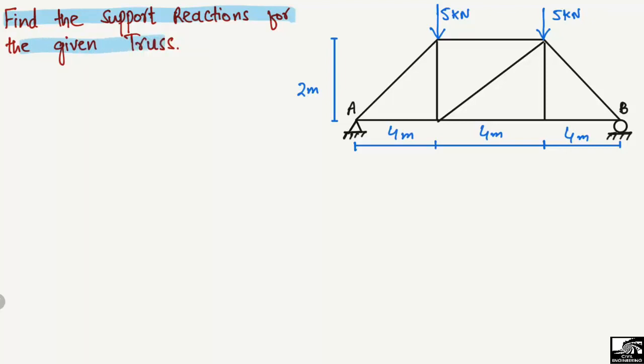This truss has different loads acting on it — two concentrated loads of 5 kN each. The dimensions of the truss are also given: 4 meters, 4 meters, and 4 meters horizontally, and 2 meters in the vertical distance.